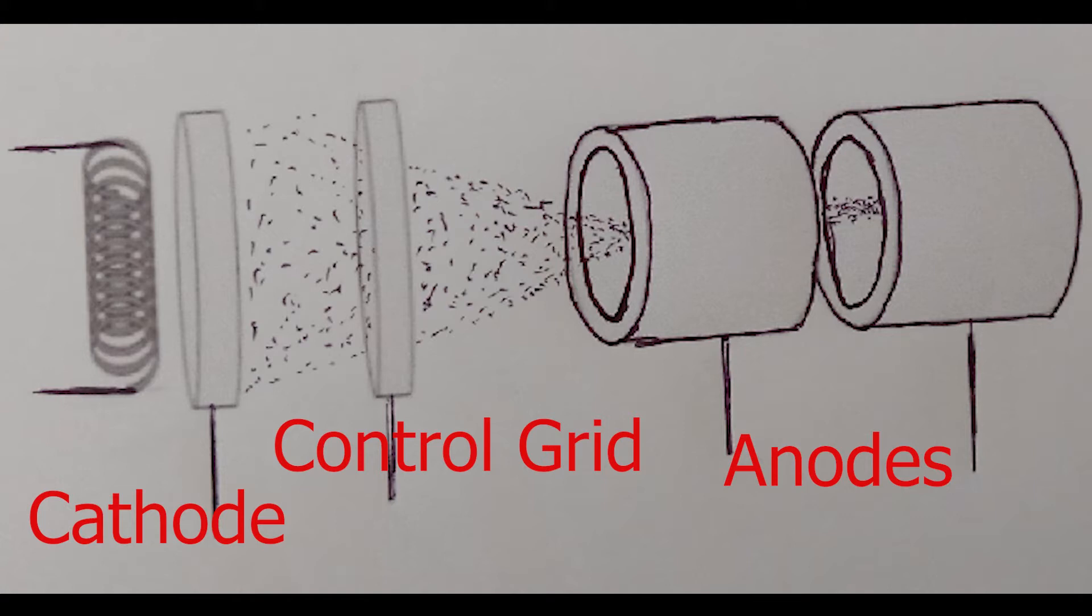The cathode produces electrons by thermionic emission. The control grid is used to control the brightness of the spot by controlling the amount of electrons passing through it. The grid is made more negative to reduce the number of electrons passing through it, and it is made less negative to increase the number of electrons passing through it.